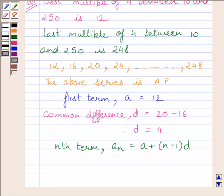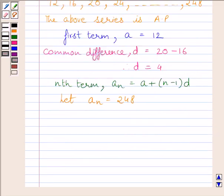Now let us assume that Nth term of AP is 248. Now we will substitute corresponding values of AN, D and A in this expression. And we get 248 is equal to 12 plus (N minus 1) multiplied by 4.